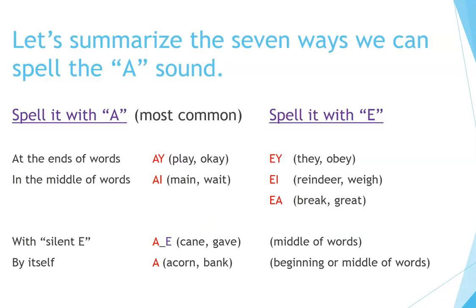Let's summarize the seven ways we can spell the A sound. Spell it with A — most common. At the ends of words: A-Y — play, okay. In the middle of words: A-I — main, wait. With silent E — cane, gave. In the middle of words by itself — acorn, bank. At the beginning or middle of words, spell it with E: E-Y — they, obey; E-I — reindeer, weigh; E-A — break, great.